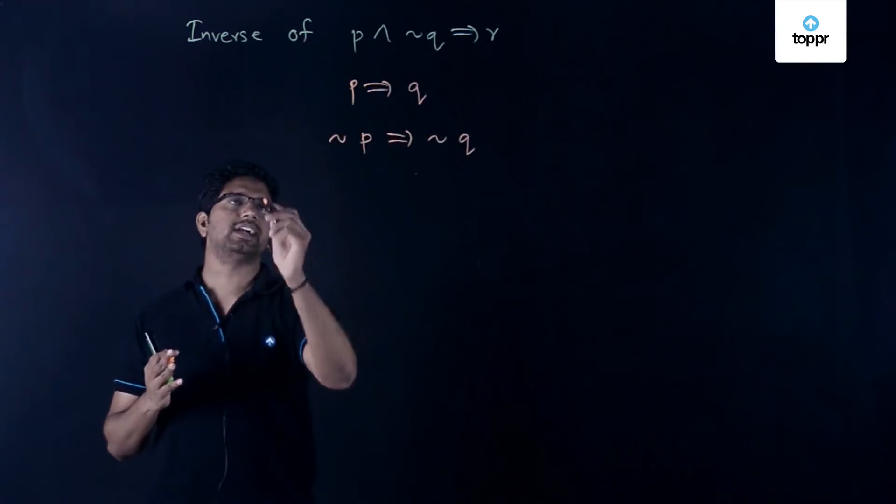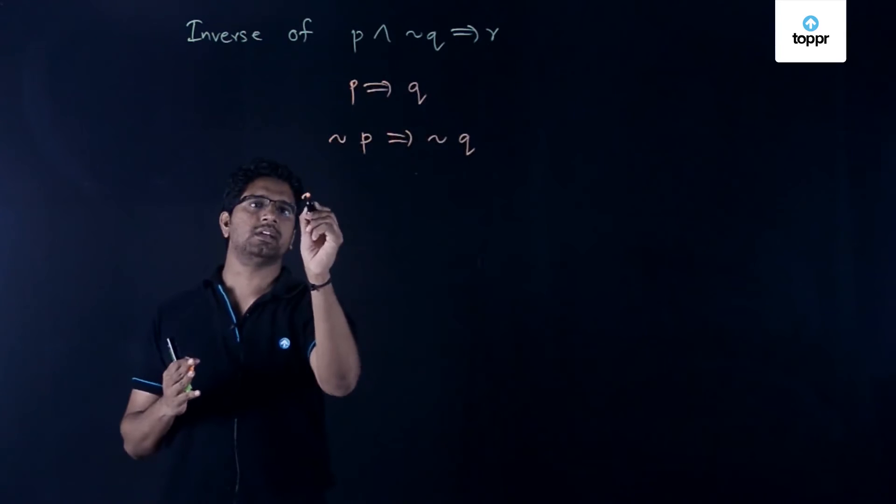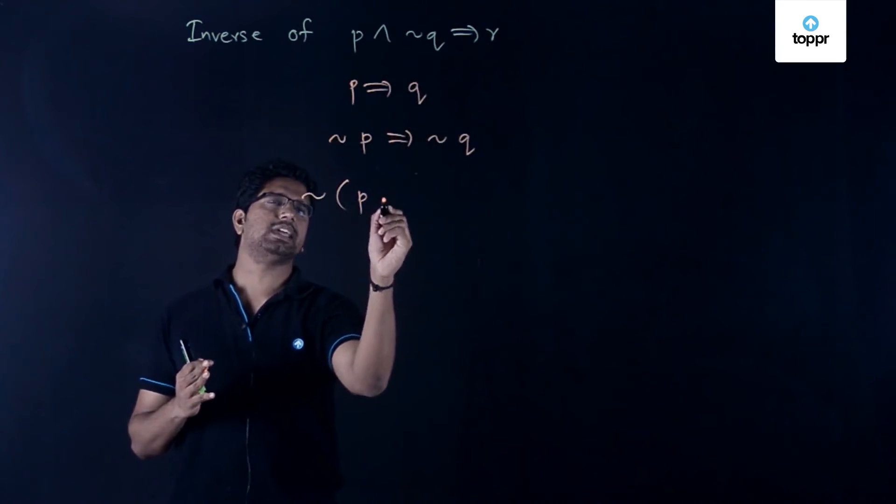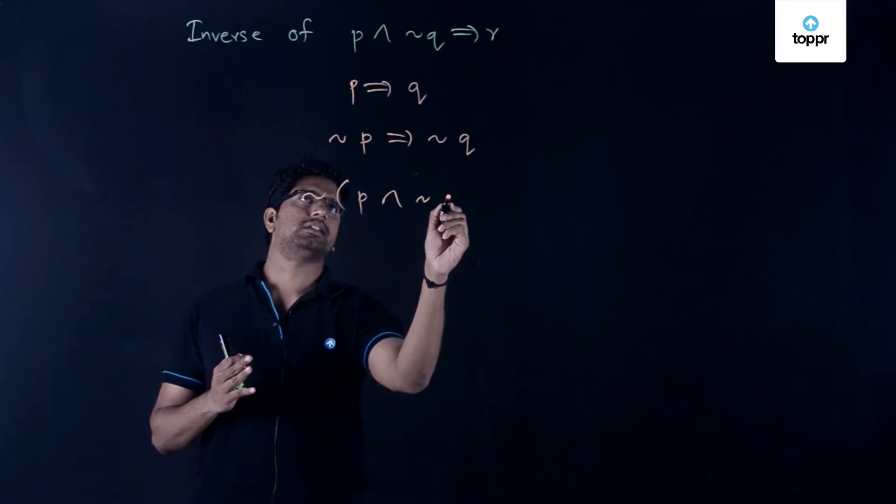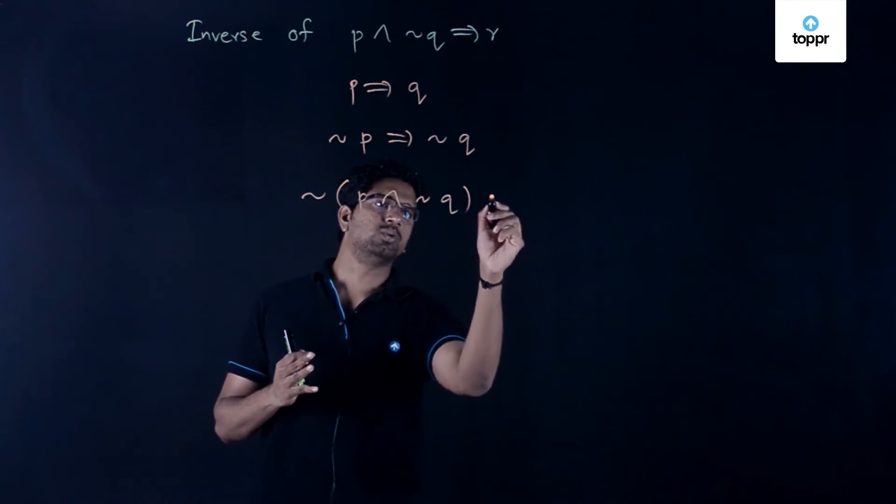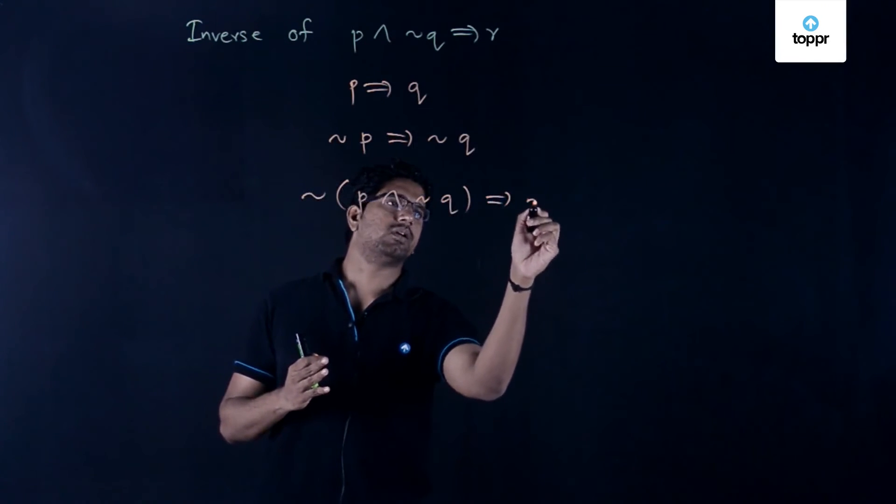All that we have to do is that the inverse of this statement will be negation of p and negation q implies not r.